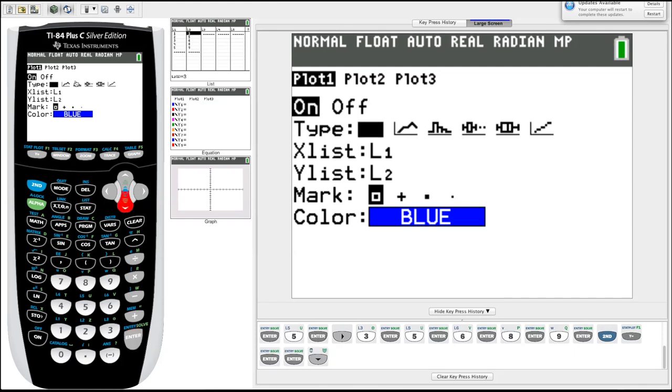Under type, there's a few different types of plots we can make. You've got box and whiskers and histograms, but the first one we'll select is the scatter plot, which is the first one that's highlighted right now. Hit enter.